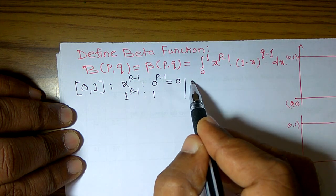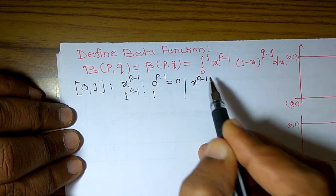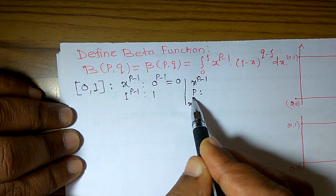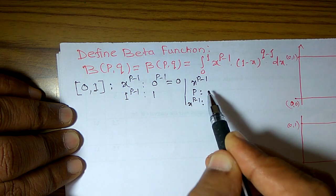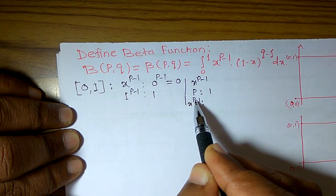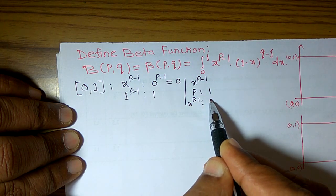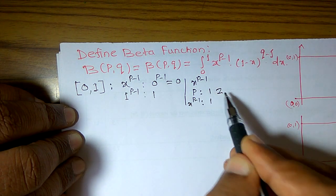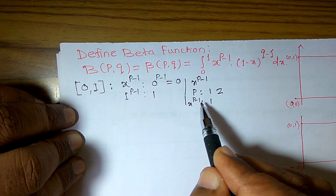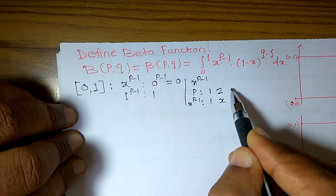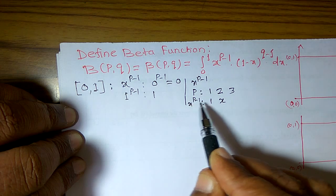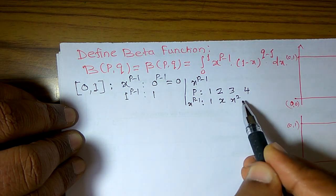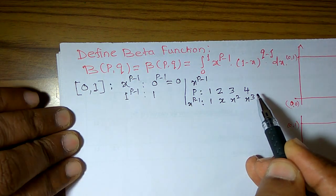Now for x^(p−1), I want to replace p by some values. Replace p by 1: x^(1−1) = x^0 = 1. Replace p by 2: x^(2−1) = x. Replace p by 3: x^(3−1) = x². Replace p by 4: x^(4−1) = x³, and so on.